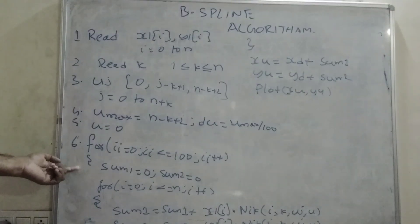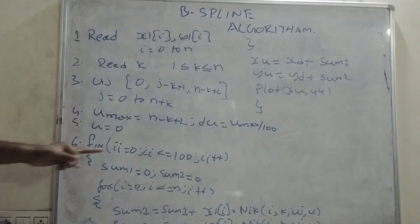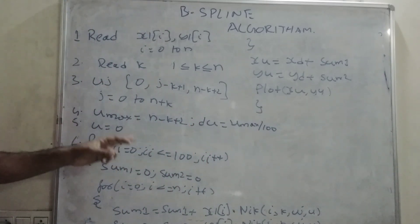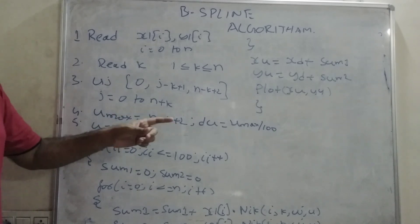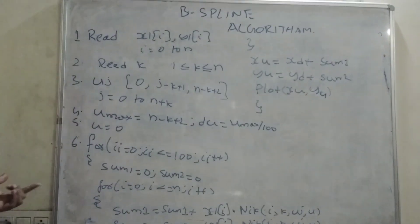And here, the second main loop, we are trying to close. So, like that, for every value of, for 100 parametric values, between 0 to u max, we will be plotting x(u) and y(u). And this is how we can generate a B-spline curve.